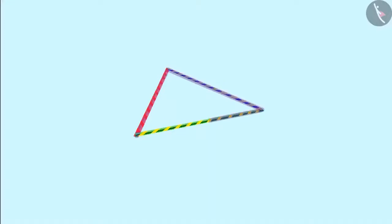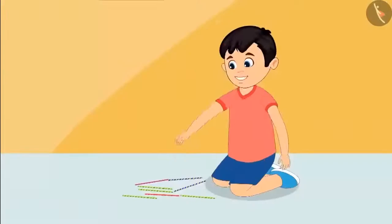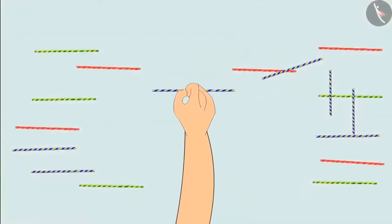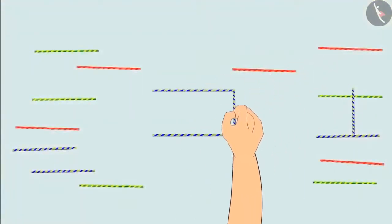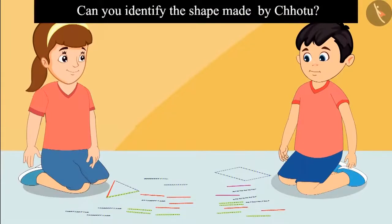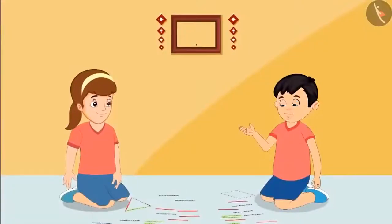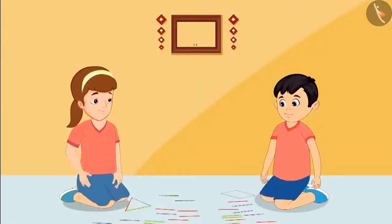Chotu said, 'Neha, this shape is made of three straws — it means it is a triangle.' Neha confirmed he was right. Then Chotu made a shape with four straws and asked Neha what it was. Children, do you know which shape this is? It is made of four straws, so it is a rectangle. Neha confirmed: 'Yes Chotu, you are right.' Then Chotu asked Neha to use four equal length straws to make another shape. Neha made it and Chotu said, 'We call this shape a square.' Neha asked, 'This shape is also made of four straws — why is it a square then?'